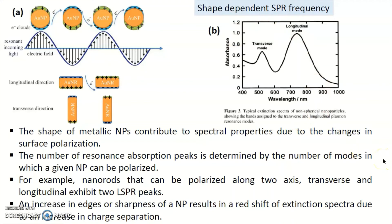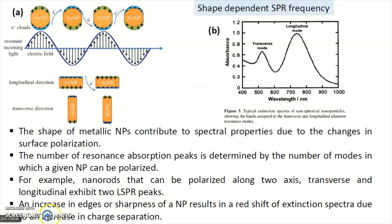The nanorods can be polarized along two axes — transverse and longitudinal — and exhibit two LSPR peaks. An increase in edges or sharpness of nanoparticles results in a redshift of the extinction spectra due to an increase in the charge separation.